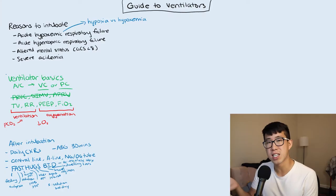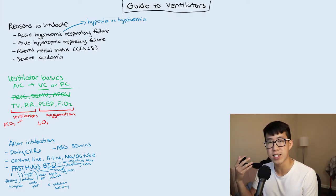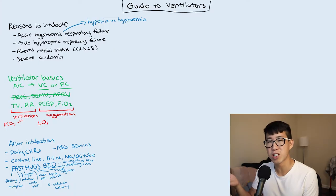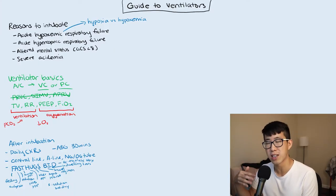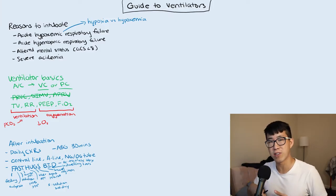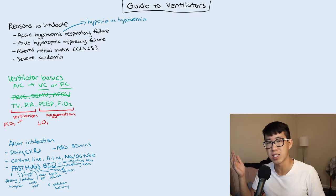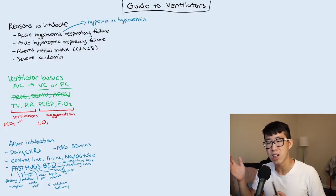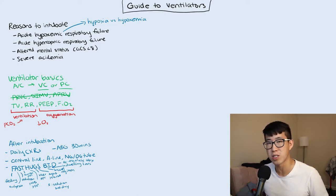We get daily chest X-rays because these patients have many lines and we need to assess placement. Most importantly, we look at the endotracheal tube and want to make sure it's about three to five centimeters above the carina. You don't want it too deep, which could cause main stem bronchus intubation and only inflate one lung, but not too high either, which risks accidental extubation.